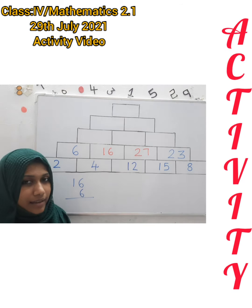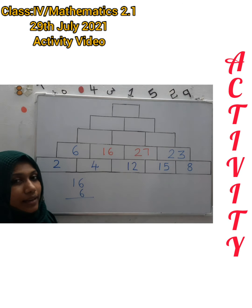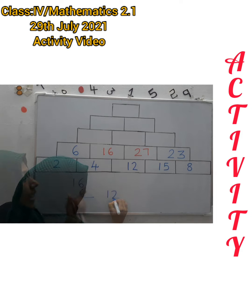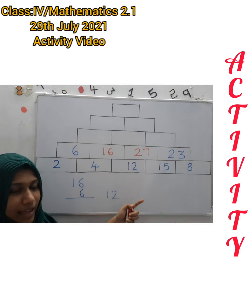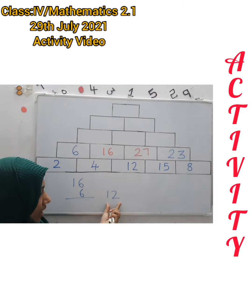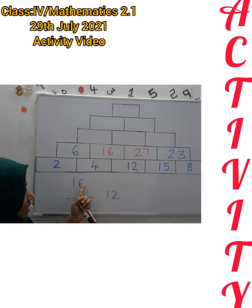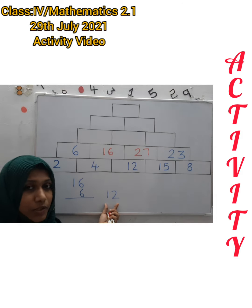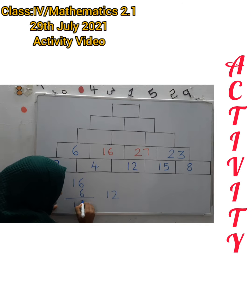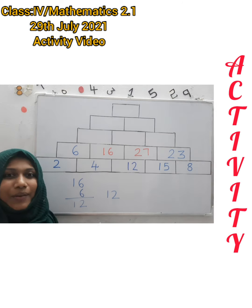How can we add? From the right side. 6 plus 6 is 12. In the first step while adding we get 1 digit at a time, but here the result is a 2-digit number 12. Then how can we write it? We cannot simply write 12 directly.